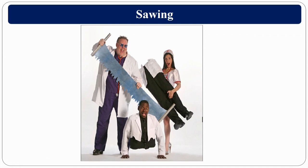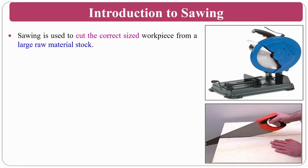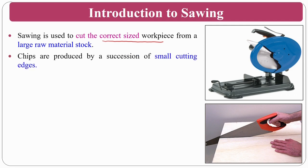Now we are moving to the sawing process. Sawing is used to cut the correct work pieces from raw materials. If you want to cut required shapes from a large or bulk material, you can go for the sawing process. Chips are produced by a succession of small cuttings — there is a series of cutting edges that come and cut the particular component or bulk material.